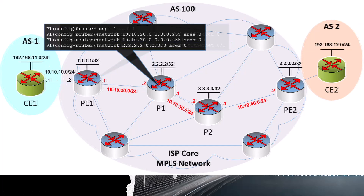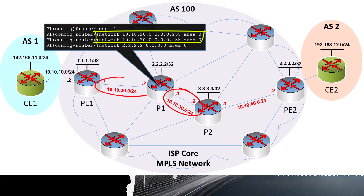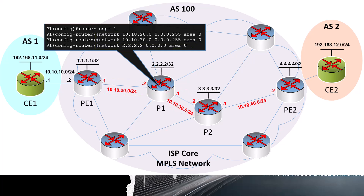Here we see a sample OSPF configuration found within a P router. All networks on all interfaces are advertised as well as the loopback address. Ultimately, all IP addresses of all P and PE routers on physical interfaces and loopback interfaces — except those facing the customer edge devices — should be reachable from each other.